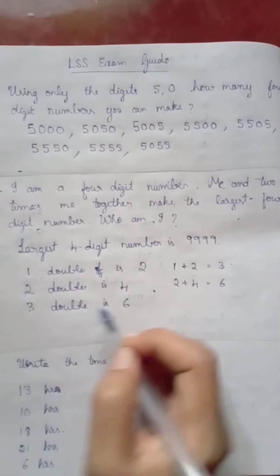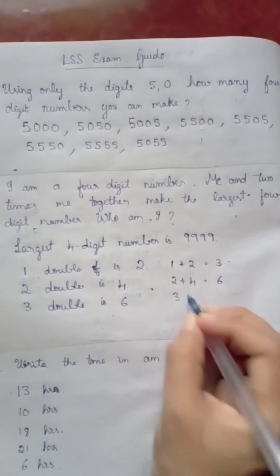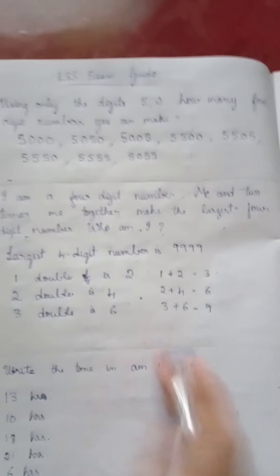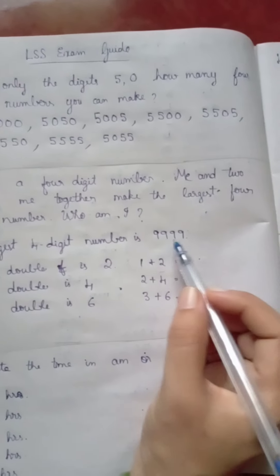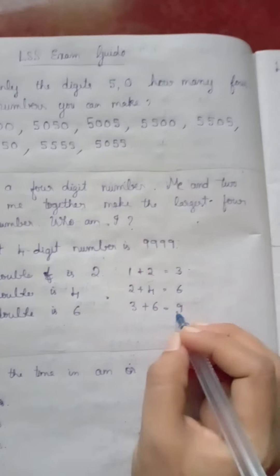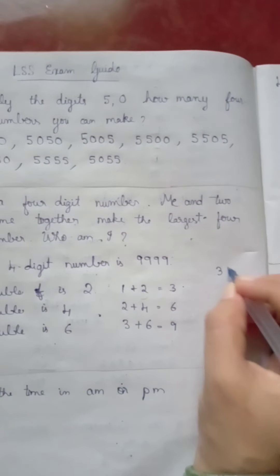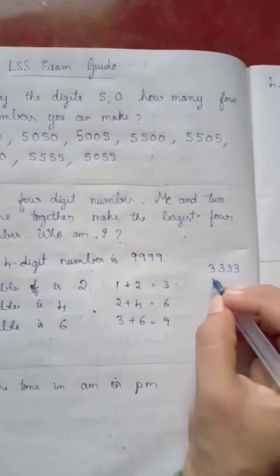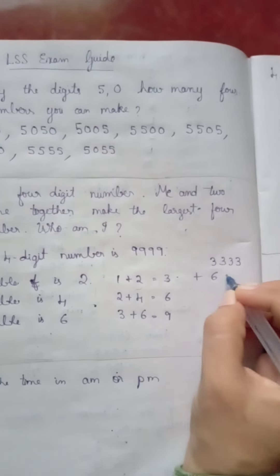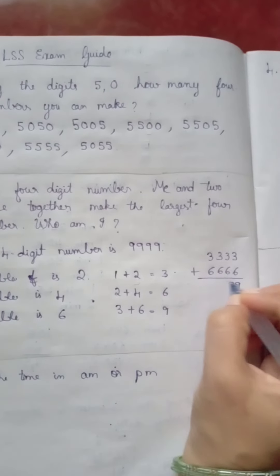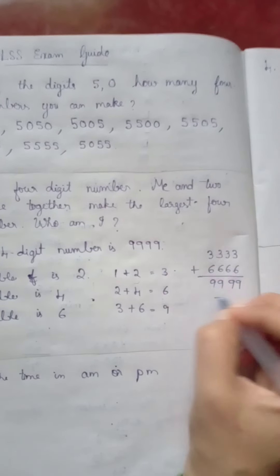So what number we have to get? 9999. We see 3 plus 6 equal to 9. So 3333 plus 6666, which gives 9999.